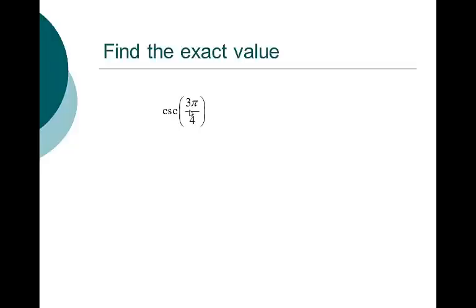Cosecant of 3 pi over 4: remember, cosecant is the reciprocal of sine. Our reference angle is pi over 4. The sine of pi over 4 is 1 over square root of 2. Taking the reciprocal gives us square root of 2. Since 3 pi over 4 is in quadrant 2 and sine is positive there, cosecant is also positive. Our final answer is square root of 2.